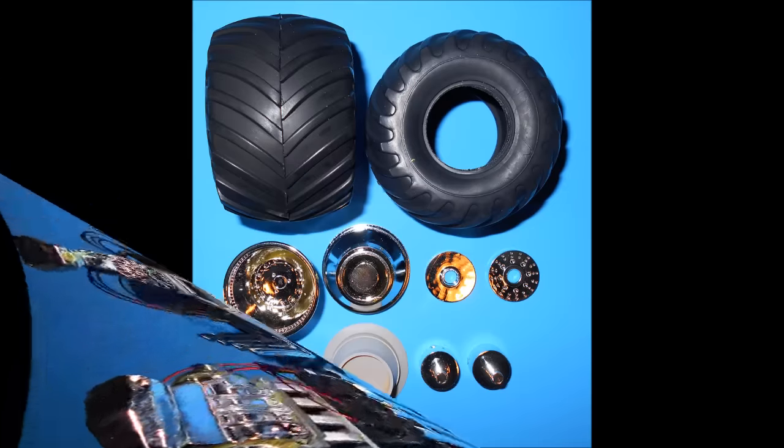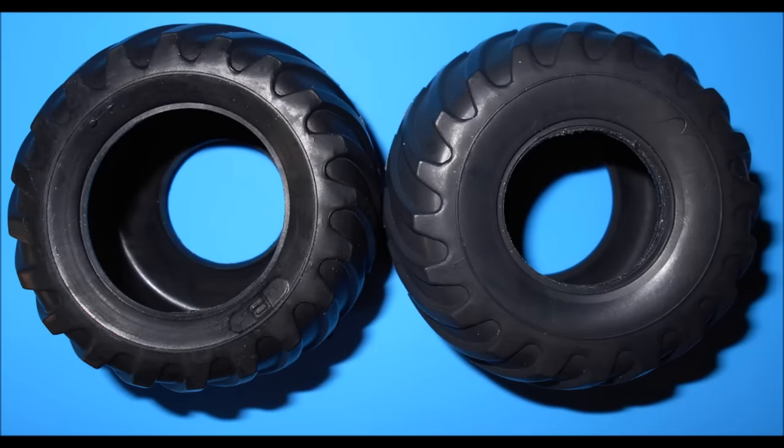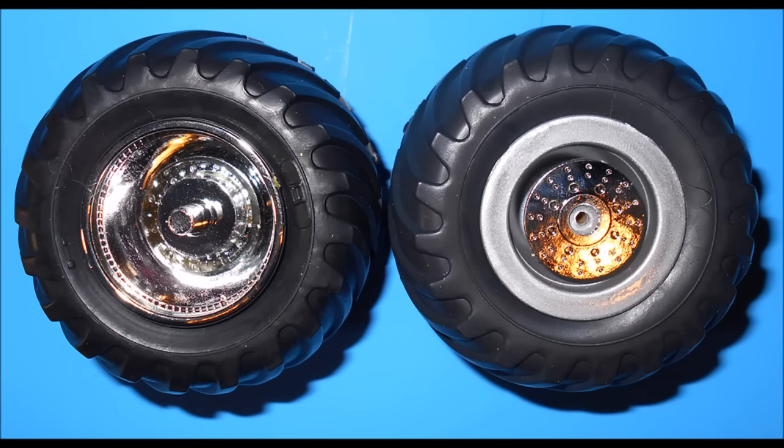Now we'll assemble what I would consider are the largest tires I've ever seen in a 1/25 scale model. Note that the front and the rear tires have different size holes. Paint the rim backs aluminum. Install the wheel weights to the rim fronts, and then add the brake discs to the rim backs. Now install both the inner and outer rims.